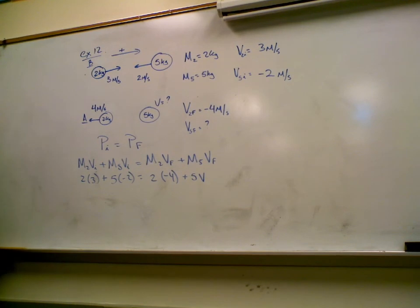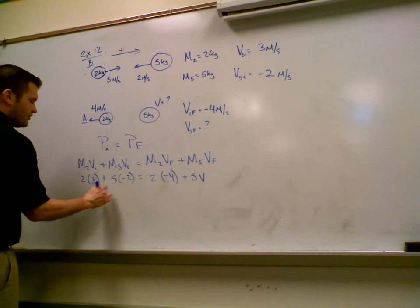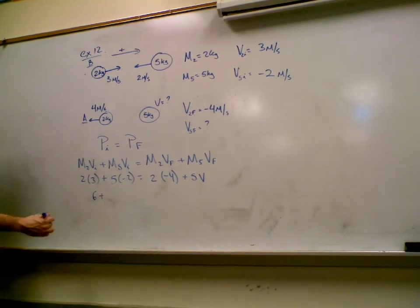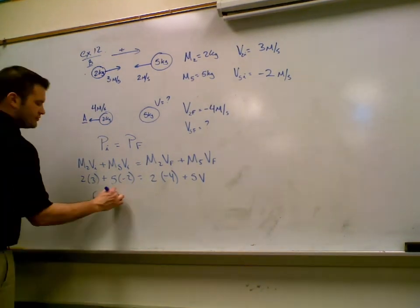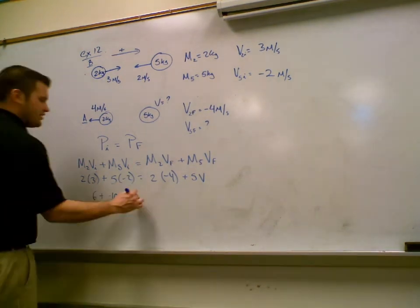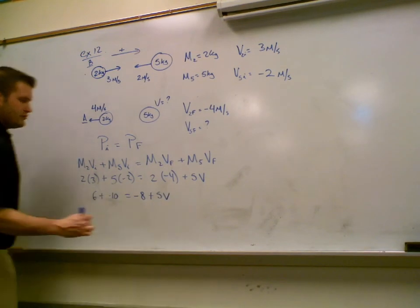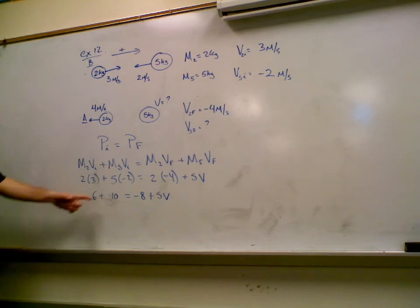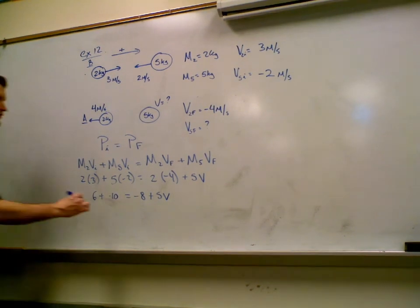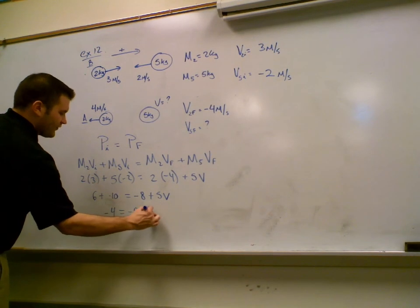Difficult physics, 7th grade math. 2 times 3 is 6. 5 times negative 2 is negative 10. 2 times negative 4 is negative 8. 6 plus negative 10. Negative 4. Negative 4 equals negative 8 plus 5V. What do I do now? Add 8.